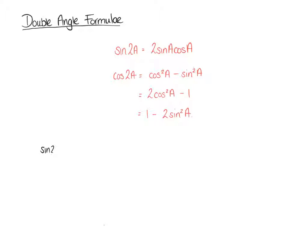So sine 2A — we can think of that as sine of A plus A. This is just a little proof of where these come from. You don't need to remember the proofs, you're given these in the formula sheet, but it's good to see where they're coming from so you understand this isn't anything new. It's just an expansion on what we've been doing. We know that sine of A plus A can be rewritten as sine A cos A plus cos A sine A from our compound angle formula. It doesn't matter which way round our sine and cosine are as long as they're multiplying — it's the same thing. So that's just 2 sine A cos A.